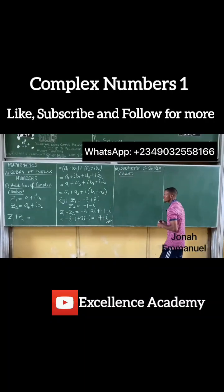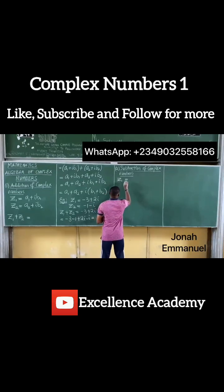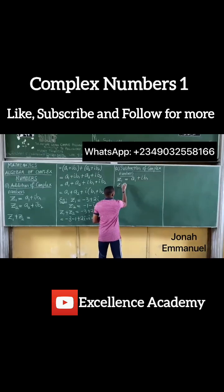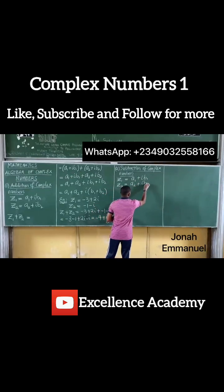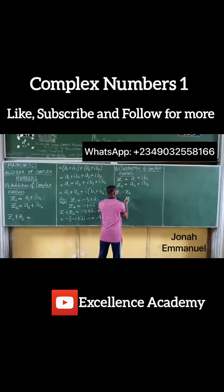Subtraction of complex numbers. Let's have z1 as being equal to a1 plus ib1 and z2 being a2 plus ib2. To subtract them, it's as easy as z1 minus z2, which will be equal to...